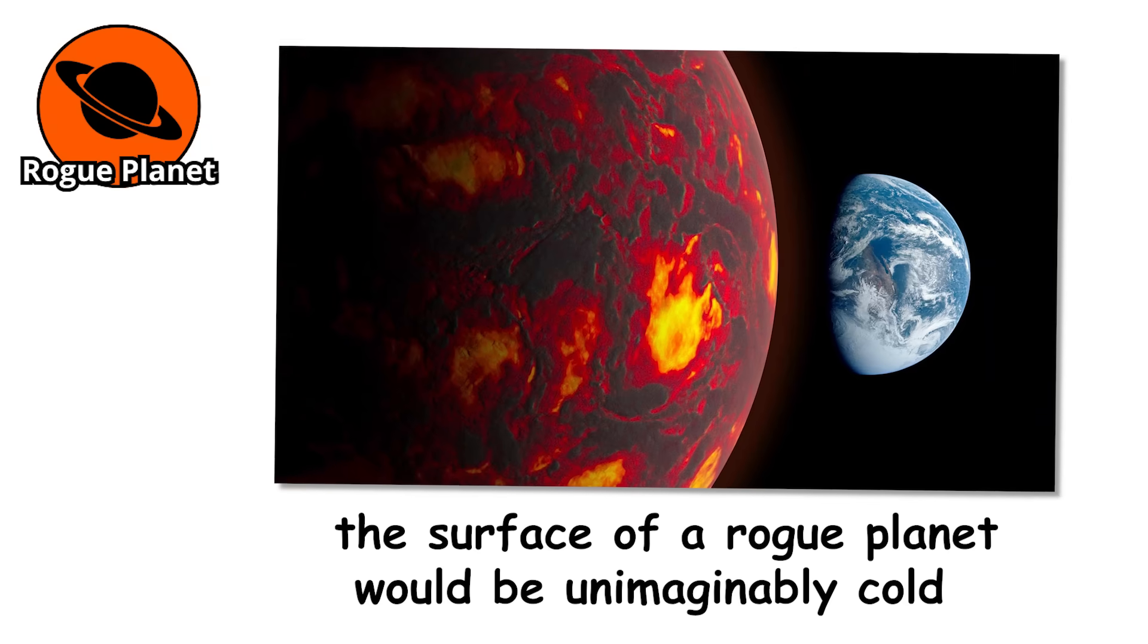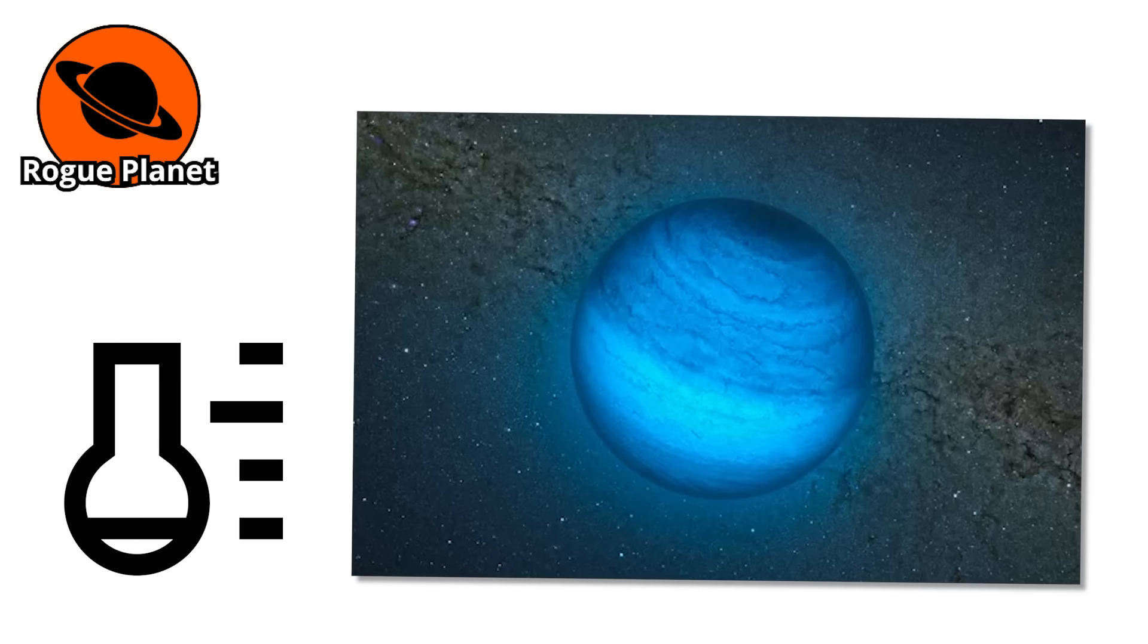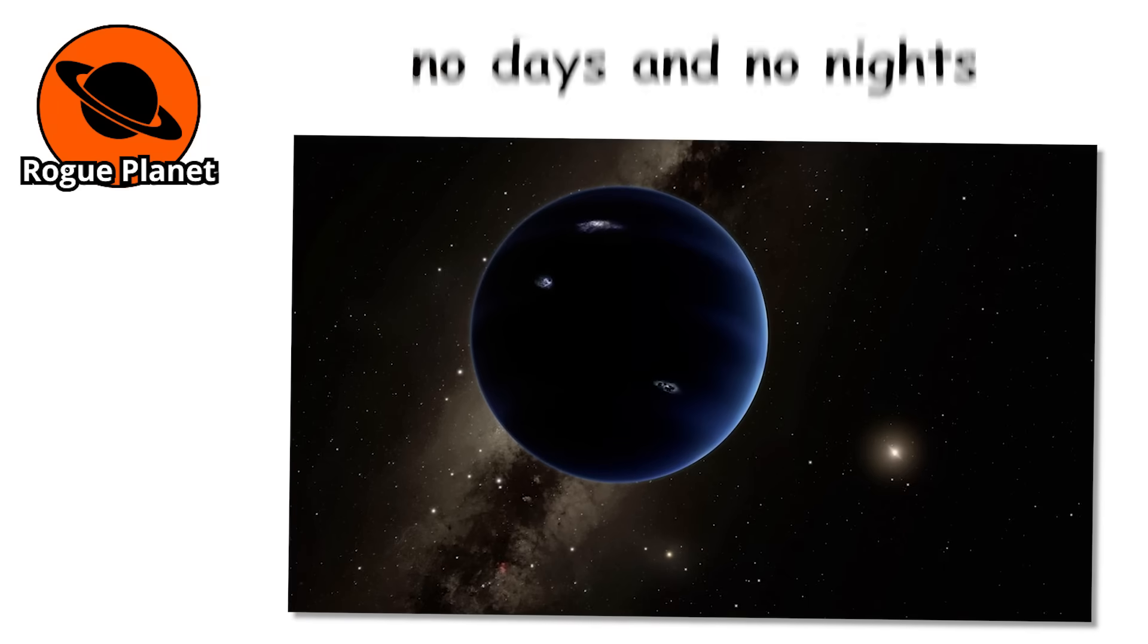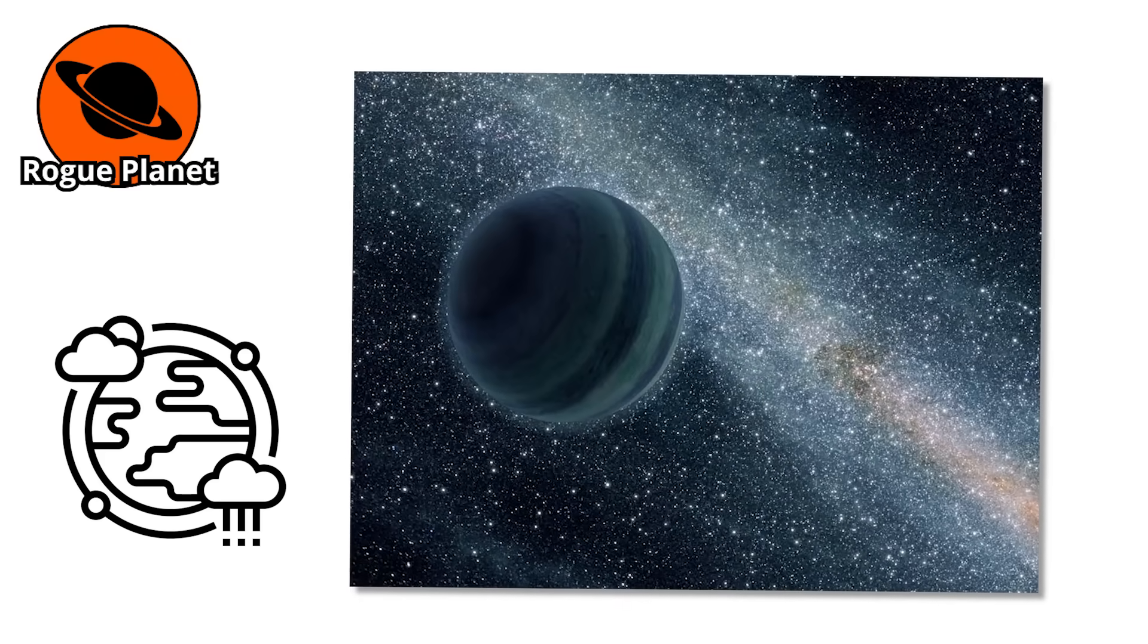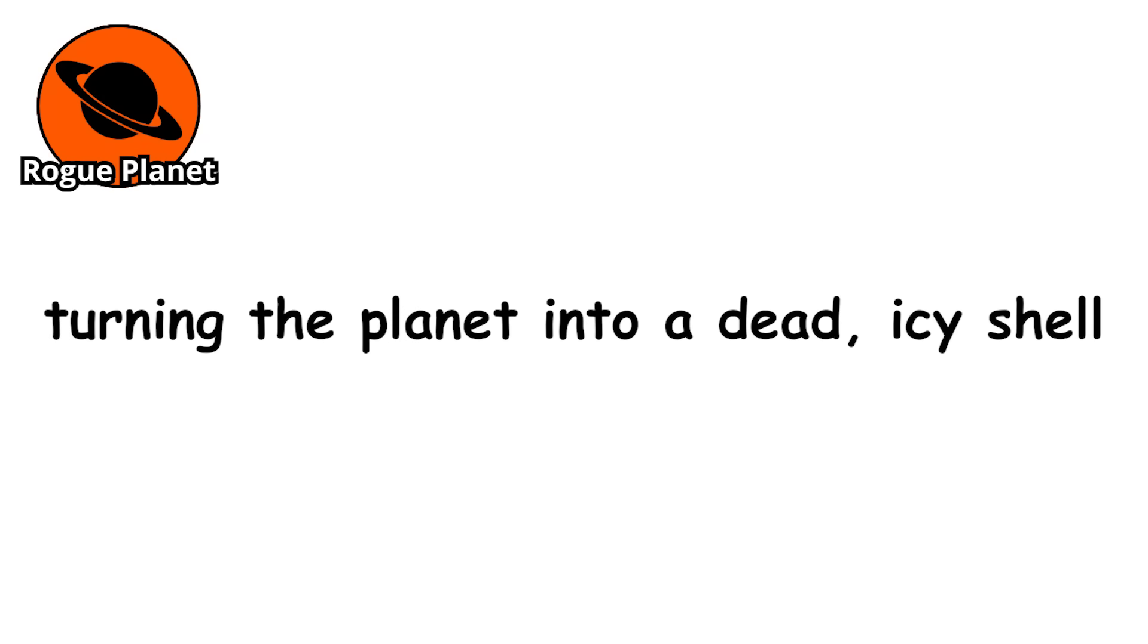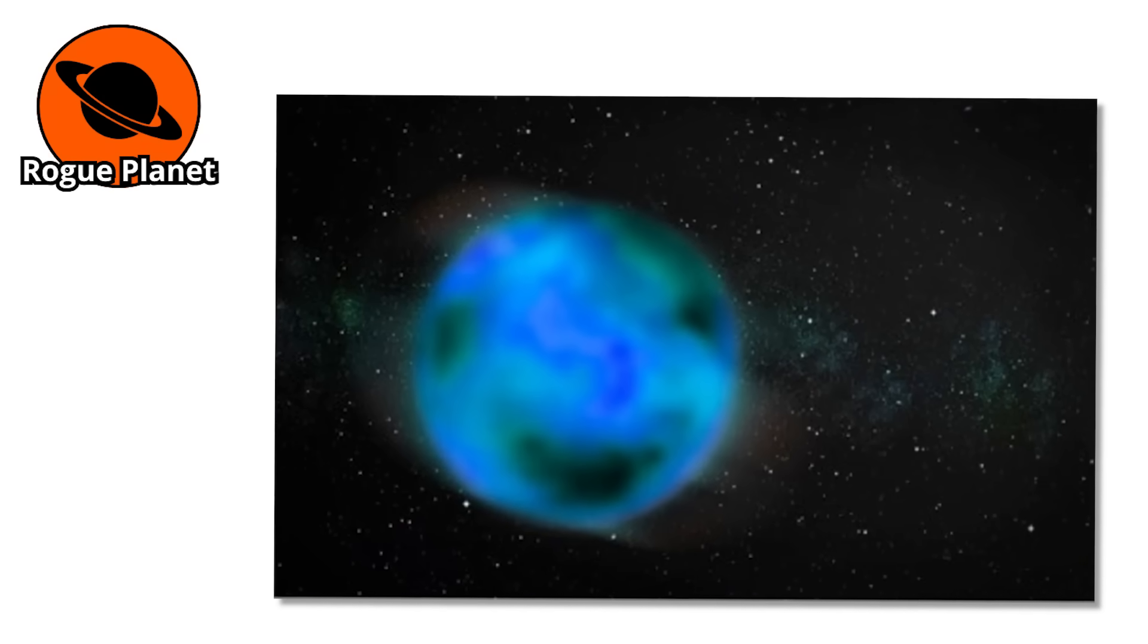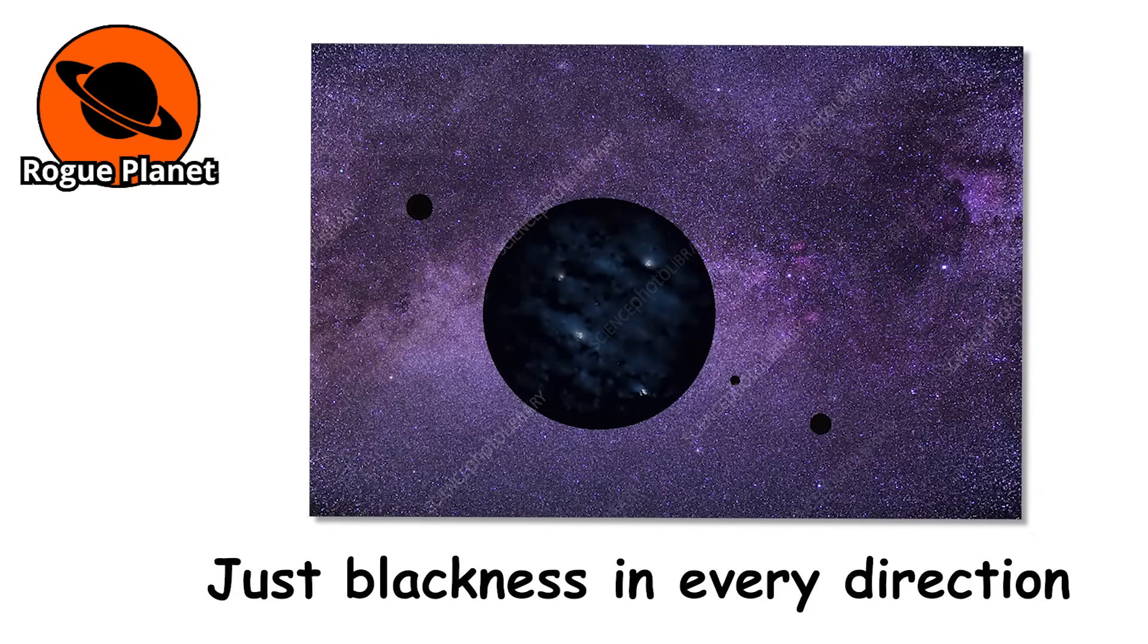Without sunlight, the surface of a rogue planet would be unimaginably cold. Temperatures would drop so low that even nitrogen gas could freeze. There would be no days and no nights, just permanent airless darkness. Any atmosphere it once had would likely freeze and fall to the surface, turning the planet into a dead, icy shell. If you stood on one, you would not see a sky full of stars. You would see nothing, just blackness in every direction. The silence would be total. No birds, no wind, no echoes.